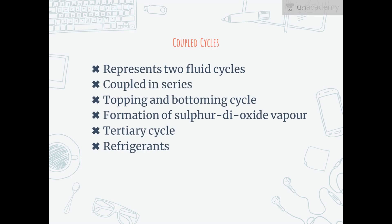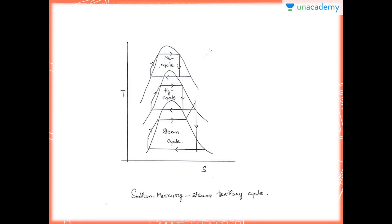So let's move on to coupled cycles. The mercury-steam cycle represents two-fluid cycles where two Rankine cycles have been coupled in series. The mercury cycle is called the topping cycle and the steam cycle is called the bottoming cycle. If sulfur dioxide is added in the low temperature range so that the heat released during the condensation of steam is utilized in forming sulfur dioxide vapor which expands in another turbine, then the mercury-steam-sulfur dioxide cycle is a three-fluid or tertiary cycle. Similarly, other liquid metals apart from mercury, like sodium or potassium, may be considered for a working fluid in the topping cycle. In the next slide, I will be showing the TS diagram of a sodium-mercury-steam tertiary cycle — showing the steam cycle, the mercury cycle and the sodium cycle.